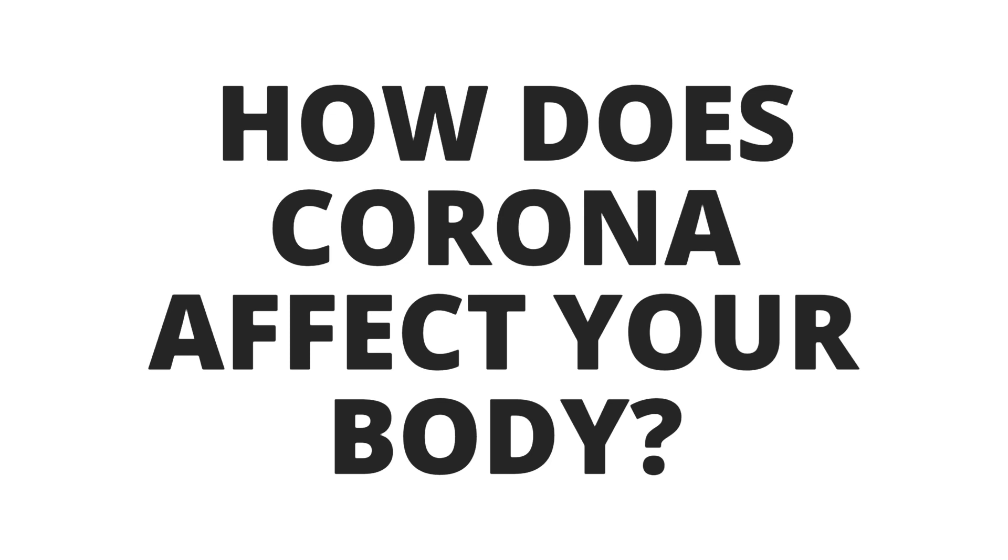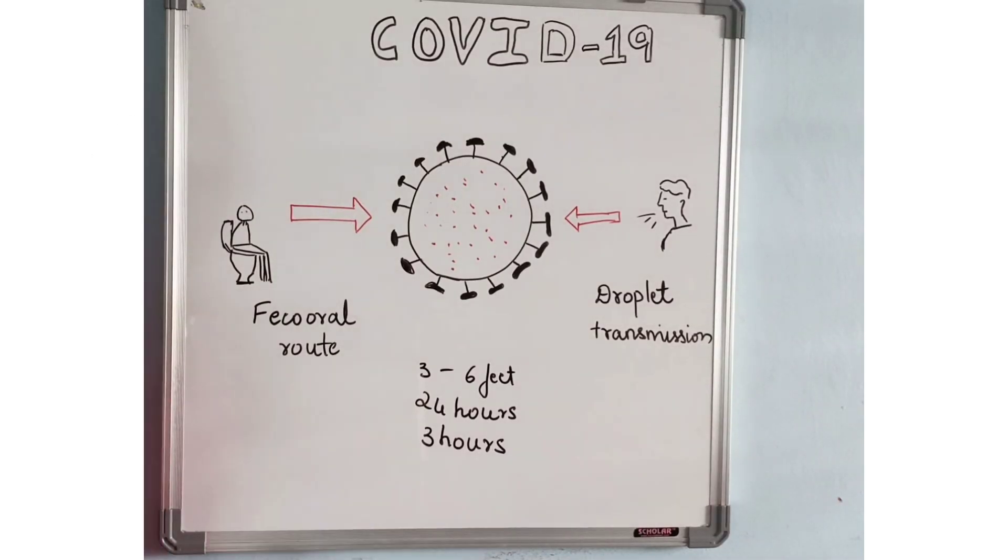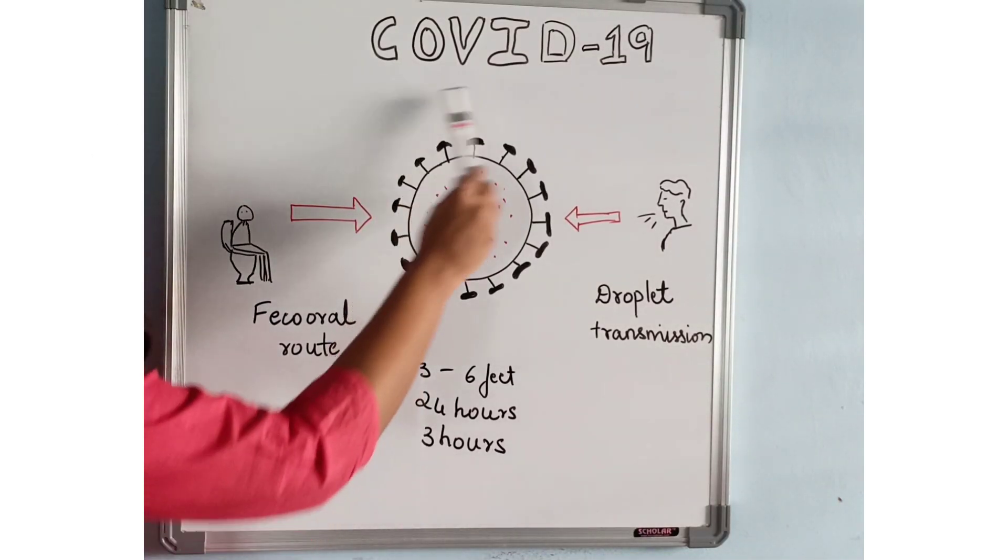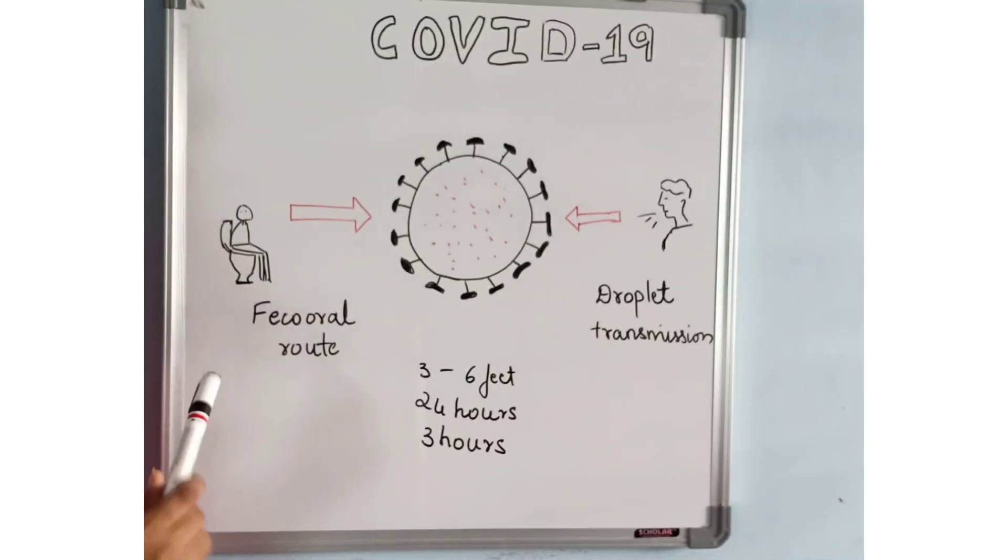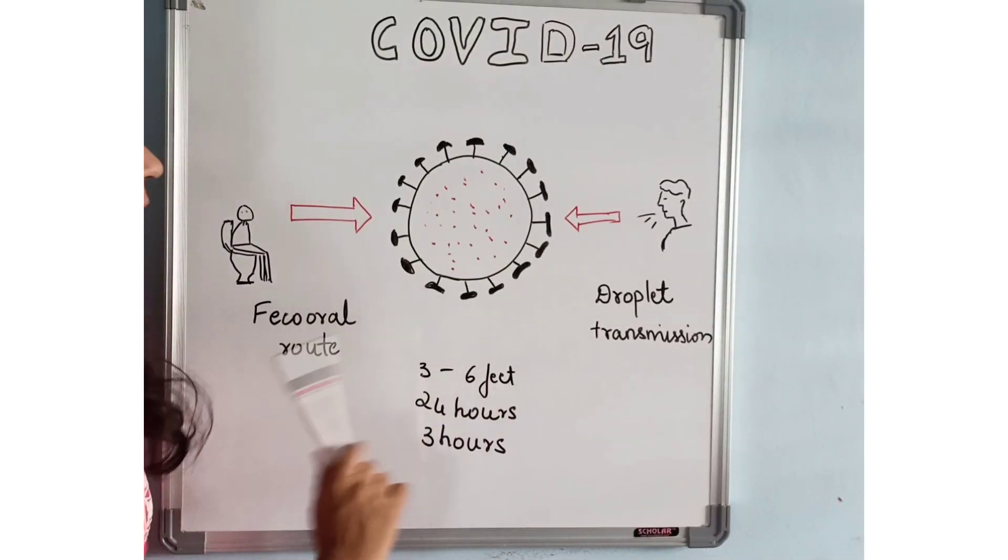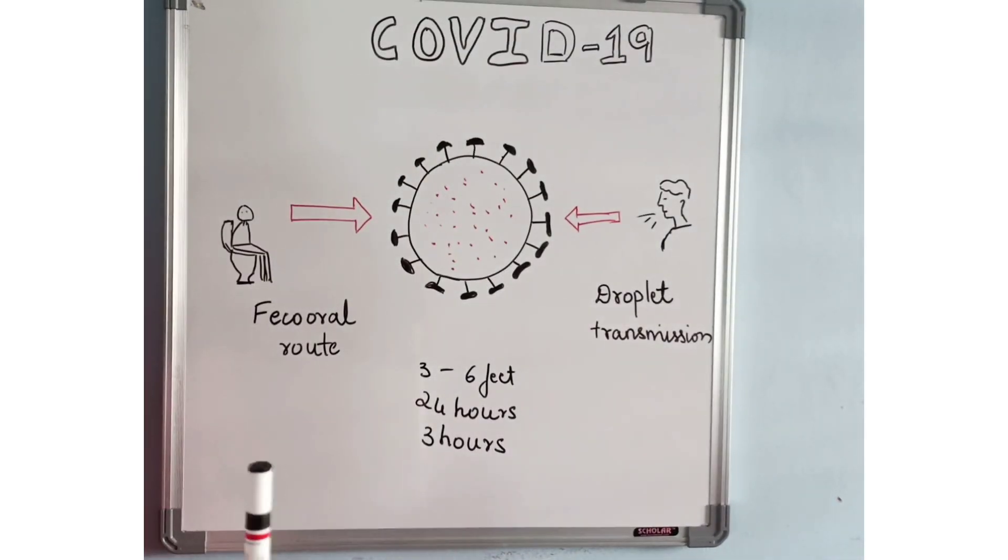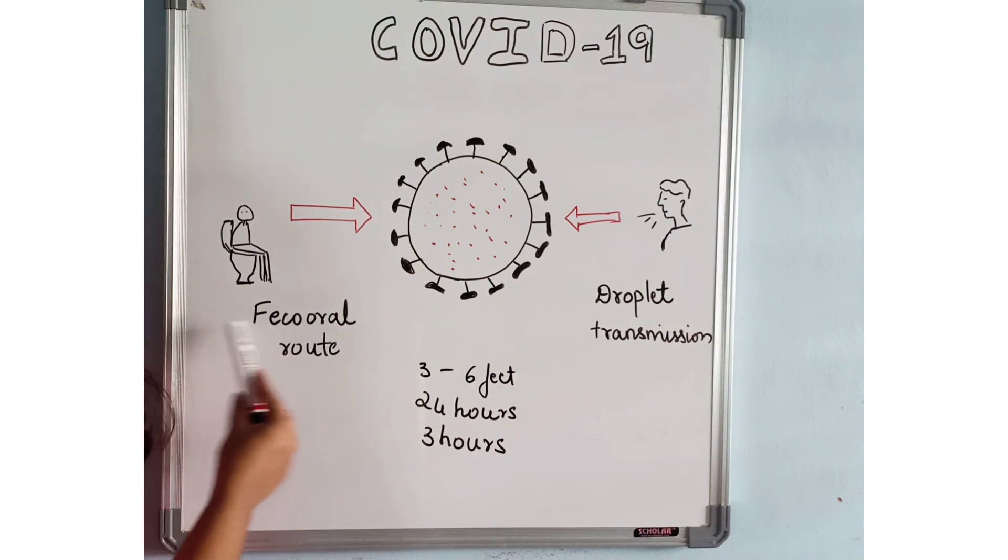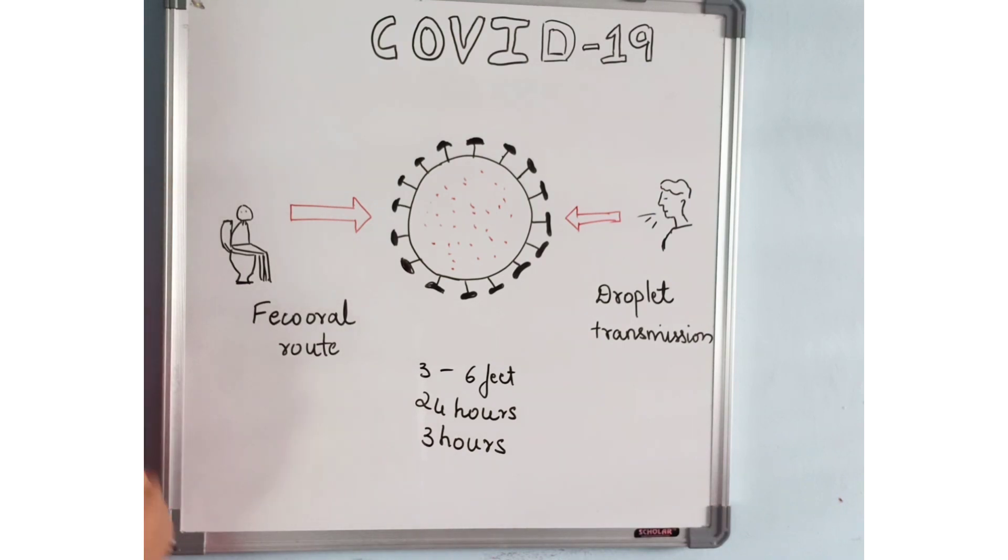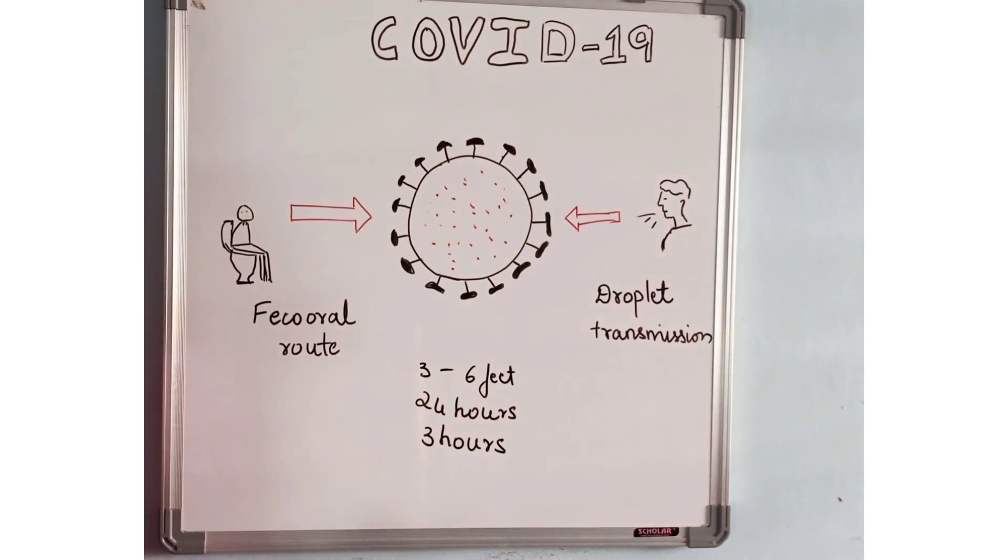How does coronavirus enter the healthy human body? There are two ways known till date for the spread or transmission of the virus: fecal route and droplet transmission. In fecal route, when an infected person goes to the washroom and doesn't wash his hands properly, the virus remains on his hands.